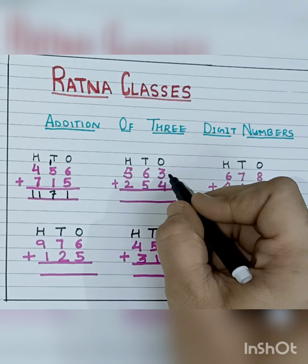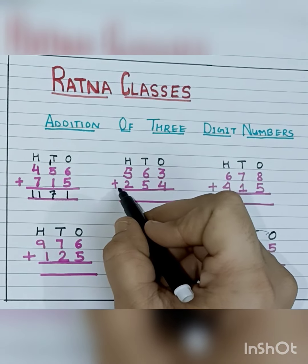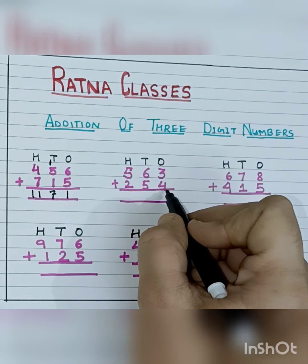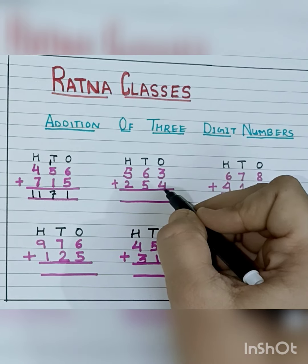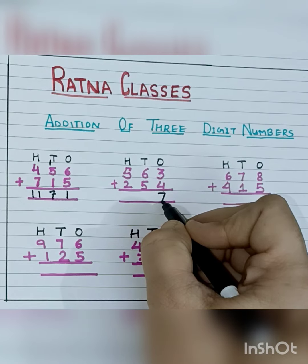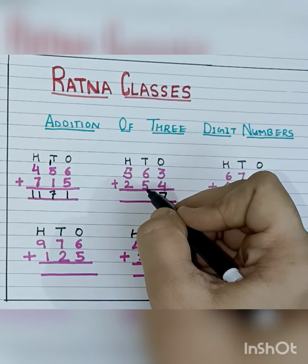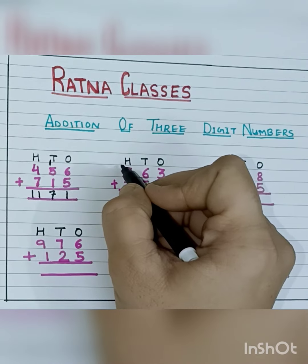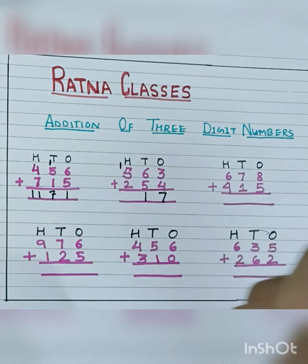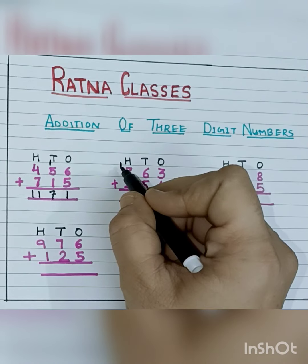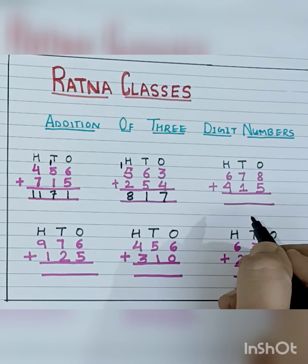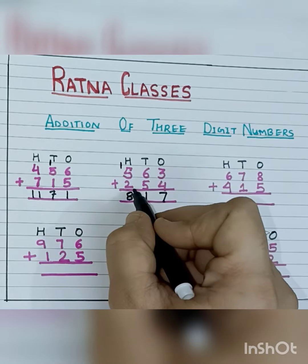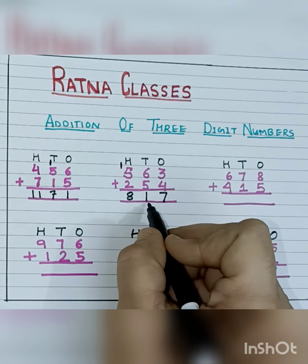Our next question is 563 plus 254. So we will write 1 over here and 1 carry over — because it is a 2-digit number. Then 5, 6, 7, 8. So we will write 8 over here. So 563 plus 254 equals 817.